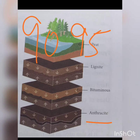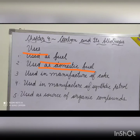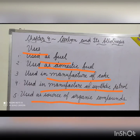On burning, anthracite produces little smoke and leaves minimum ash. Uses of coal: it is mainly used as a fuel in industries for the production of electricity. It is used as a domestic fuel for cooking. Coal is used in the manufacture of coke, which acts as a reducing agent for the extraction of metals. It is used in the manufacture of synthetic petrol. Coal is also used as a source of organic compounds like benzene, toluene, phenol and aniline.